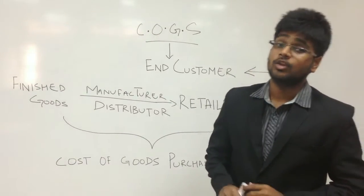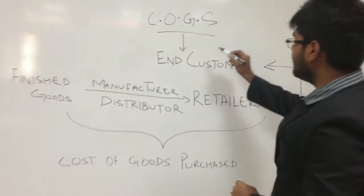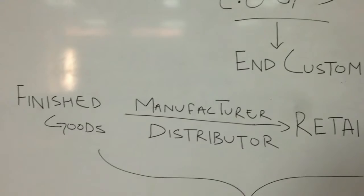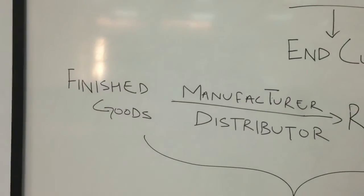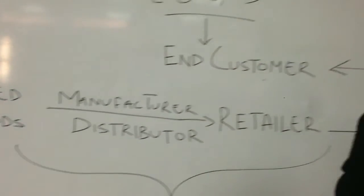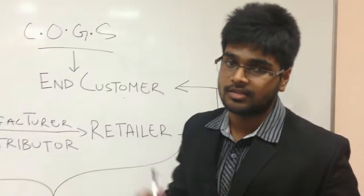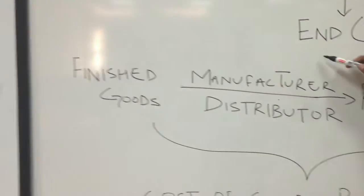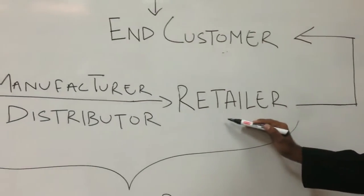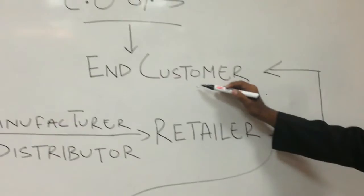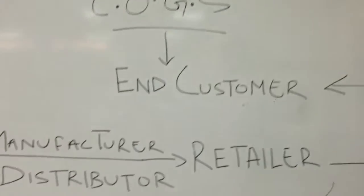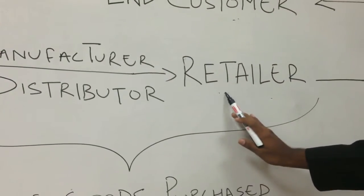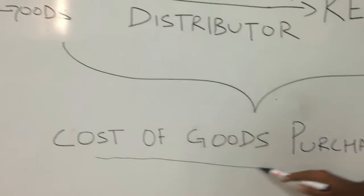I have already explained the cost of goods sold for the end customers. Now there can be another case when the cost of goods can also be on the basis of the purchase of the goods for selling it to the retailer who finally sells it to the final customer. So these finished goods by the manufacturer and distributor are sold to the retailer who finally sells it to the end customer. The cost of goods from the manufacturer or distributor to the retailer is the cost of goods purchased.